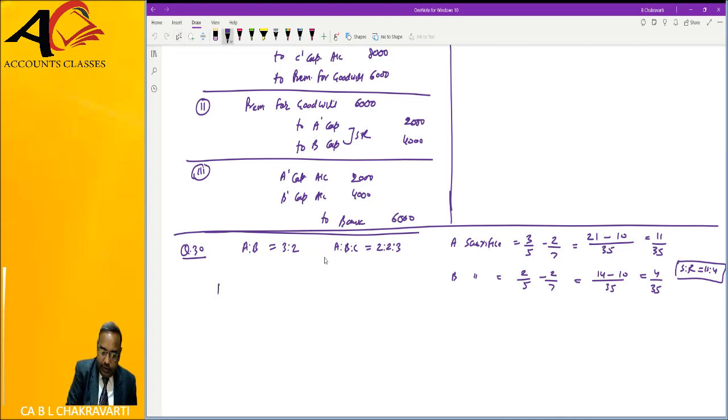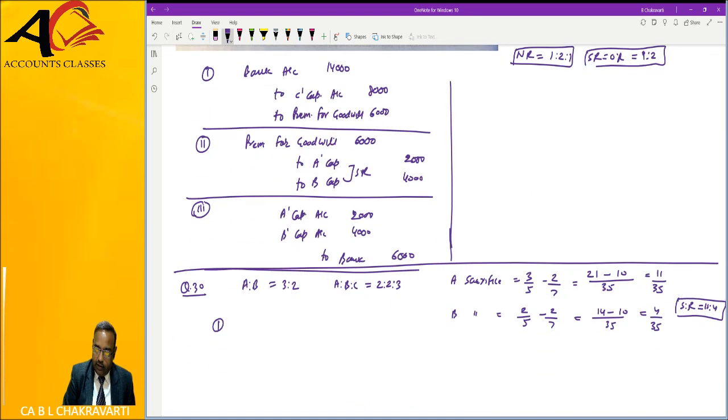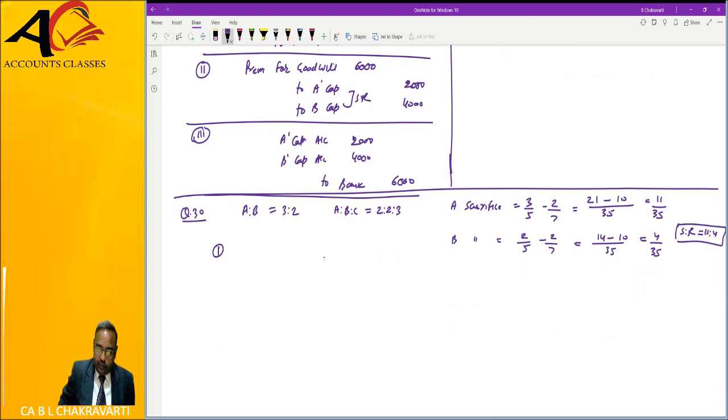Now what will be first entry? How much capital? 2 lakh, 1 lakh. So first entry will be bank account debit, C's capital account credit, premium for goodwill credit. This is 2 lakh, this is 1 lakh, this is 3 lakh.